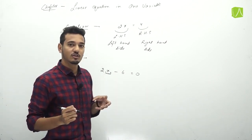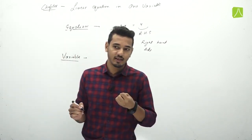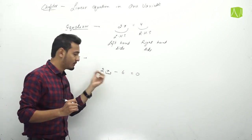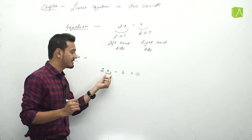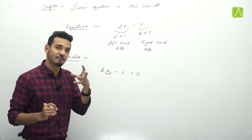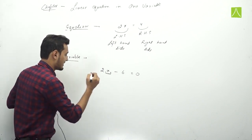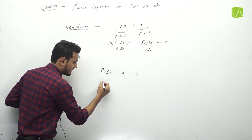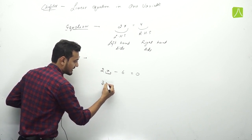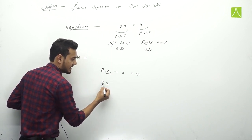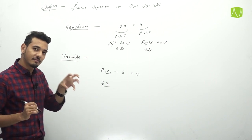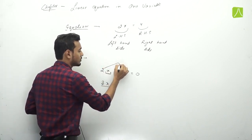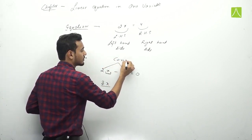x की value कुछ भी हो सकती है and it depends on the equation. तो x की value vary करती है, इसलिए हम इसे variable बोलते हैं। तो अगर कोई और example लेते हैं — 3x — ये भी एक variable है। 3 की value same रहेगी तो 3 को constant बोलेंगे। This 2 and 6 are constants.